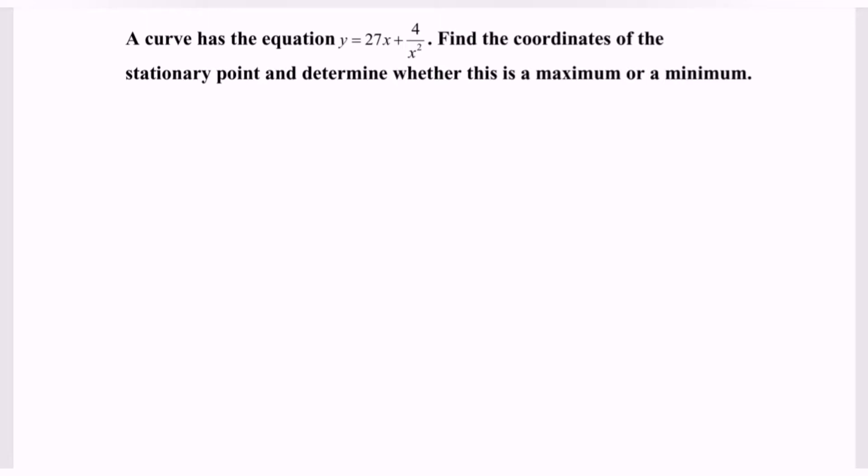A curve has the equation y is equal to 27x plus 4 multiplied with x to the power negative 2. Find the coordinate of the stationary point and determine whether this is a maximum or a minimum value.